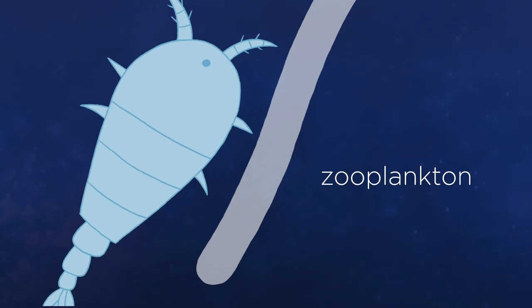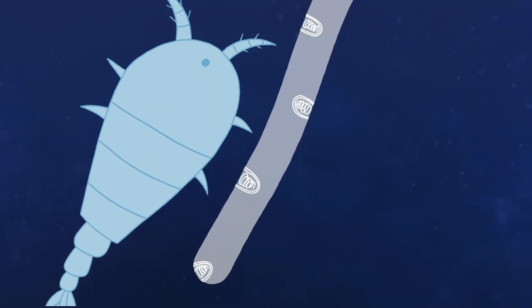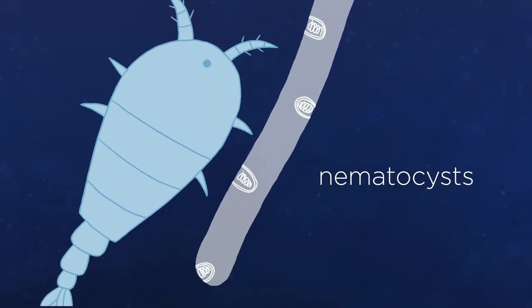Jellyfish capture small animals in the water called zooplankton using their tentacles, which carry special cells with stinging capsules called nematocysts. These microscopic harpoons shoot a fine tube that can penetrate the skin of their prey, injecting toxins that paralyze it.